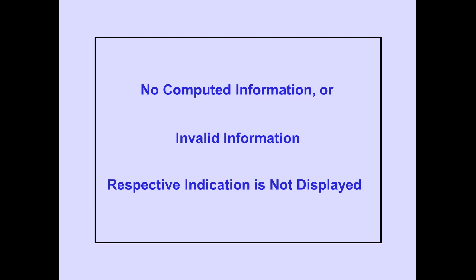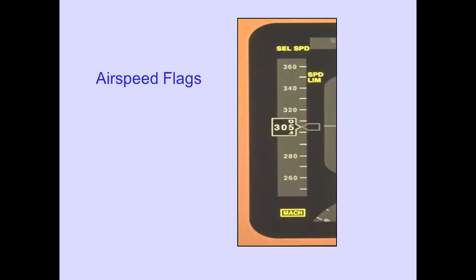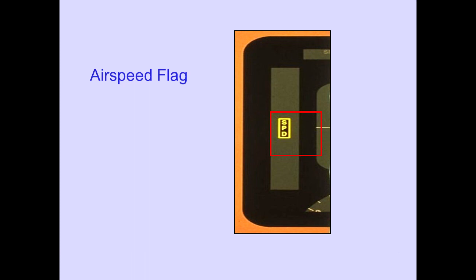For the airspeed indication, when no computed information is received or the information is determined to be invalid, the respective indicator is not displayed on the PFD. In some cases, a flag is displayed. The selected speed flag is displayed when selected speed information is invalid. The speed limit flag is displayed when maximum or minimum speed has no computed or invalid information. The Mach flag is displayed when Mach information is invalid. A speed flag is displayed if airspeed information is determined to be invalid; the airspeed tape is not displayed and all other airspeed flags are removed.